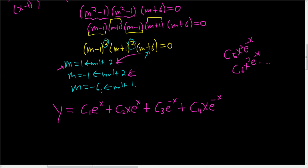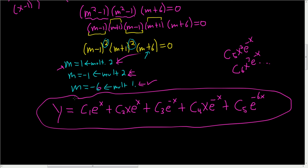And the last one is negative 6. It's hard to read. This is plus c5, and then it's e to the negative 6x. And the multiplicity is 1, so we're good to go. And that's it.